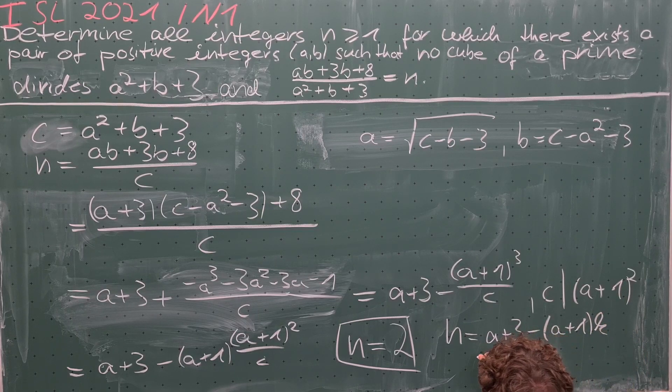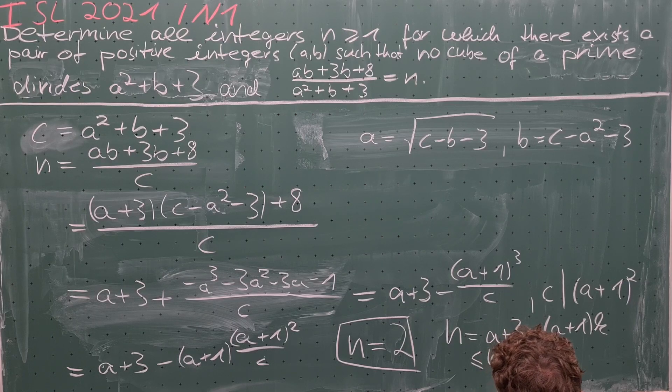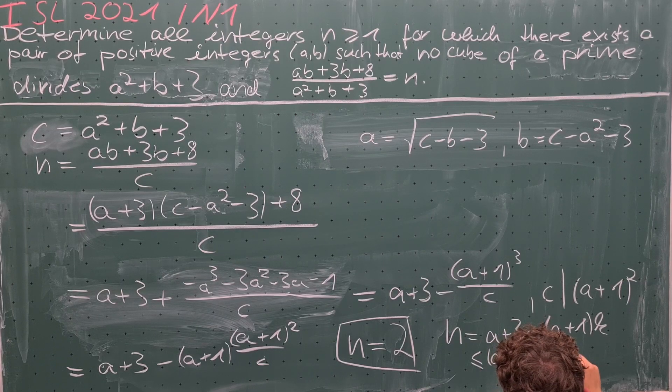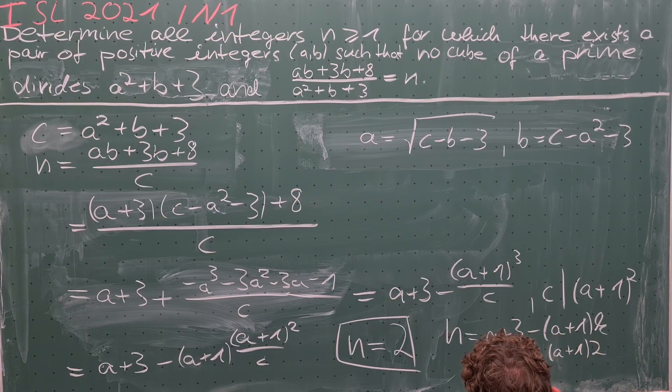which is less than or equal to a + 3 - (a+1) times 2, which equals 1 - a. And this is less than 1.